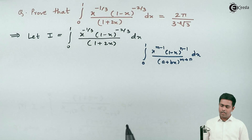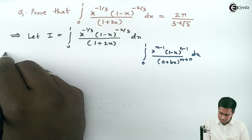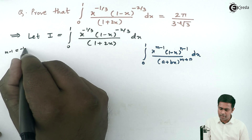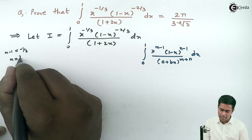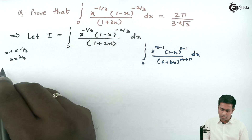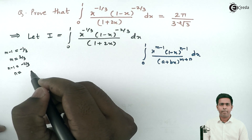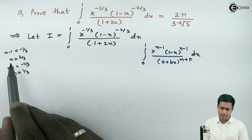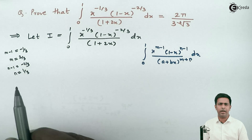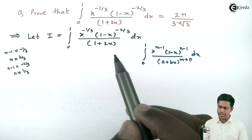Here, m minus 1 equals minus 1/3, so m equals minus 1/3 plus 1, which is 2/3. Similarly, n minus 1 equals minus 2/3, so n equals minus 2/3 plus 1, which is 1/3. The sum m plus n is 2/3 plus 1/3, which is 3/3 equals 1, so the power in the denominator is 1. This term exactly matches the required form.